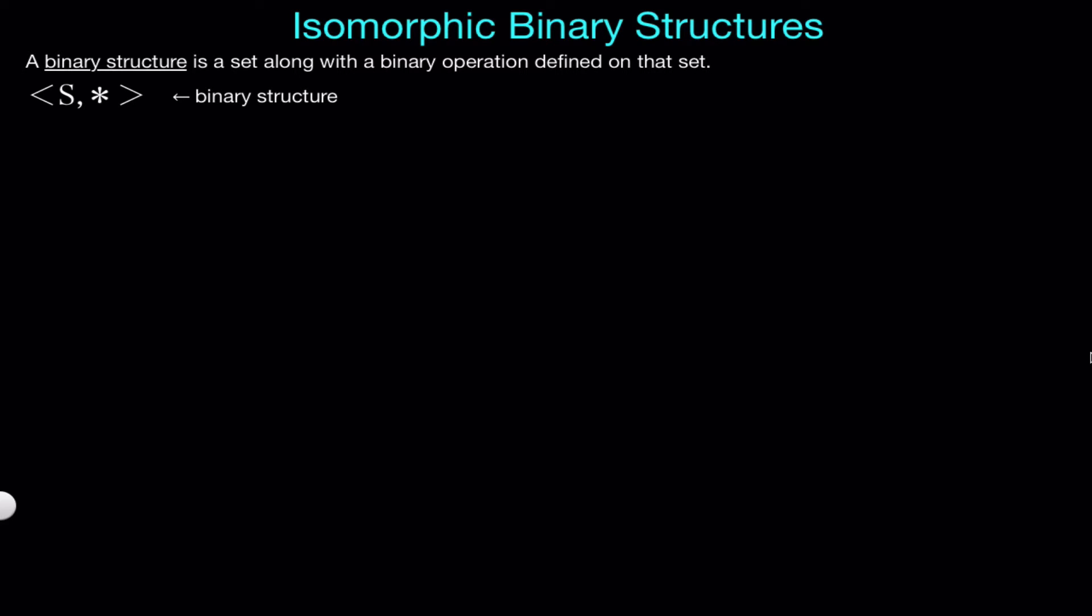Now that we got that definition out of the way, the rest of the video will be dedicated to answering this very important question: what does it mean to be isomorphic? Well, if we have two structures, we call them isomorphic if they are structurally alike, meaning the only difference between them are the names or symbols used to define the structures. Another way to say this is that they are the same structure, but one of them is just in disguise. So they may look different, but they are actually the same.